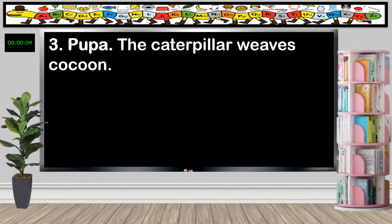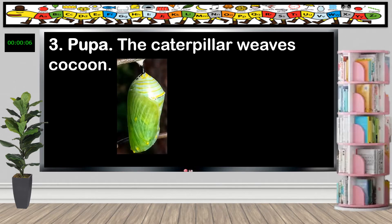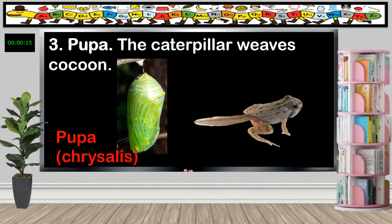The third stage is the pupa stage. The caterpillar weaves a cocoon. In this pupa stage, on the butterfly's life cycle, it is called chrysalis. On the frog's life cycle, it is called the young frog or froglet. As you can see, the froglet has a tail, but it has already grown legs.